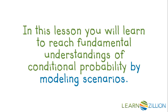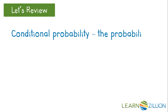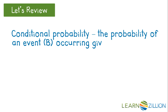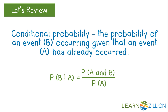In this lesson, you will learn to reach fundamental understandings of conditional probability by modeling scenarios. Conditional probability is the probability of an event B occurring given that an event A has already occurred. The formula is: the probability of B given A equals the probability of A and B divided by the probability of A.